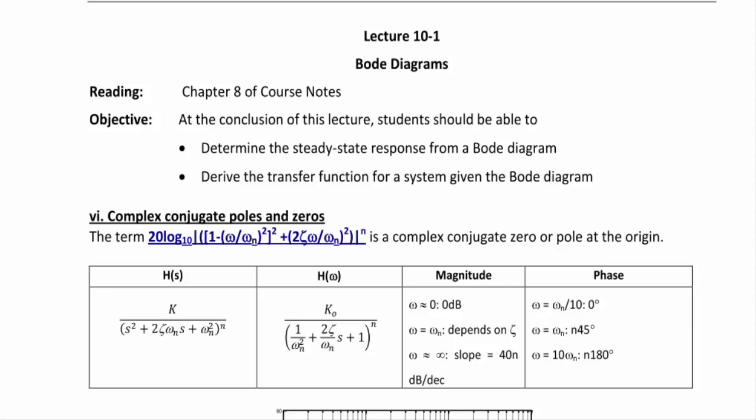Today, we will discuss how to create a Bode diagram when you have complex conjugate poles and zeros, but because it is so complicated, we won't actually create one. When you have complex conjugate poles and zeros, they will have the form 20 log base 10 of the quantity (1 minus omega over omega_n squared), that term squared, plus 2 zeta omega_n over omega_n squared, raised to some power of n.